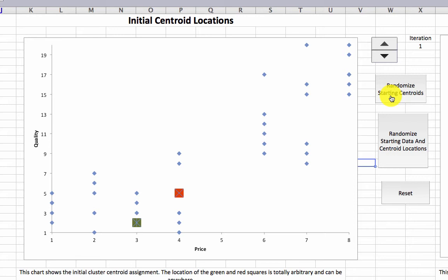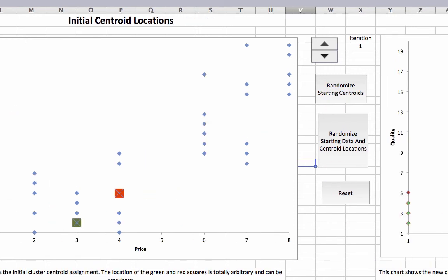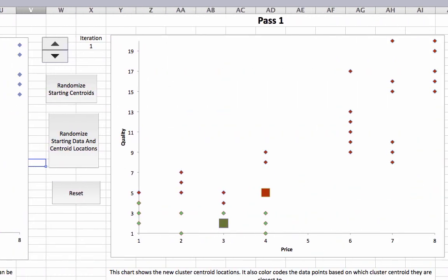Then what it's going to do is classify every single data point as being closer to or further away from one of these centroids. These green colored dots are all geographically closer to this green centroid. And these red colored dots are all geographically closer to this red centroid.